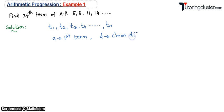Then how do we write Tn, that is the nth term? What is the formula? a plus n minus 1 into d.